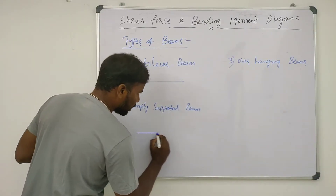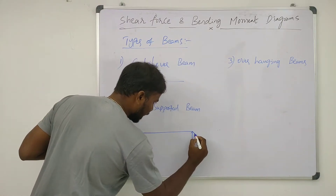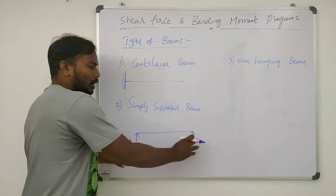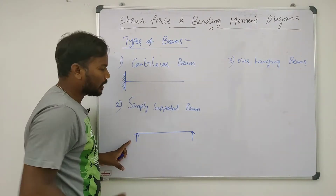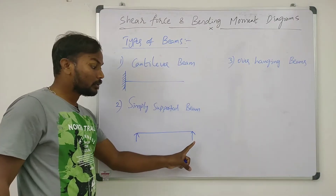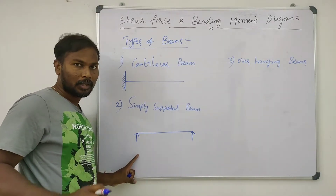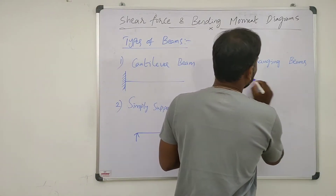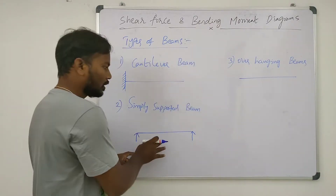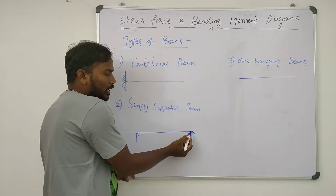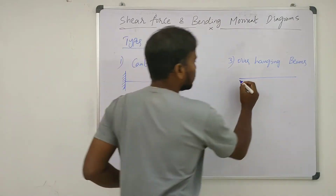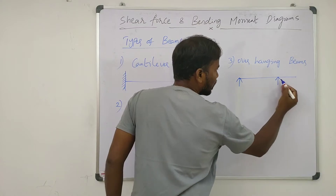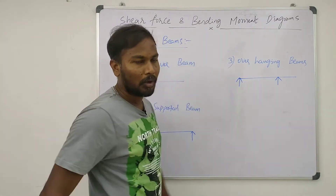Next, simply supported beam — the name itself indicates it has supports at both ends. And third one is overhanging beam: the beam extends over the support, meaning it hangs after the support — that will be called as overhanging beam.